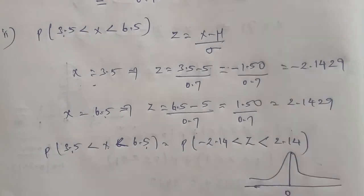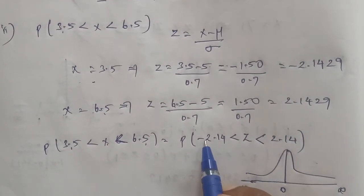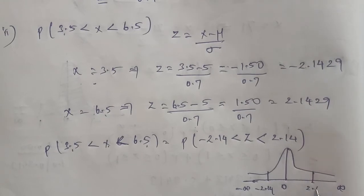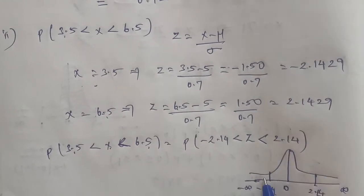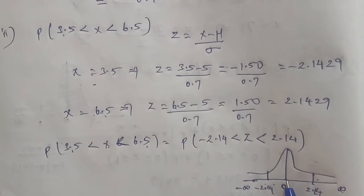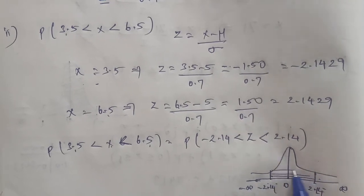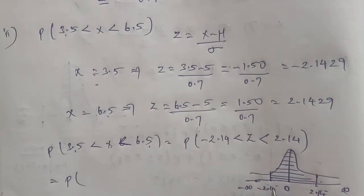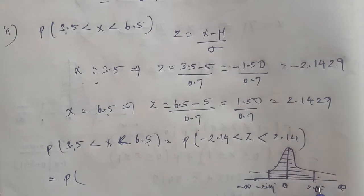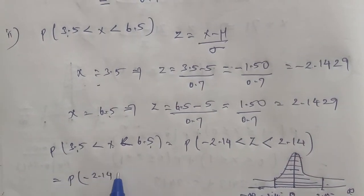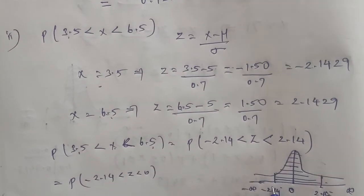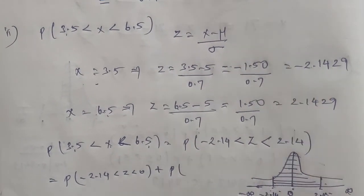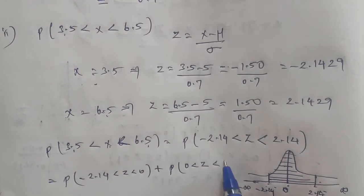The distribution ranges from 0 to minus infinity and plus infinity. Looking at minus 2.14 on the negative side and positive 2.14 on the positive side, the distribution goes from 0 to minus 2.14 and 0 to 2.14. Therefore, the distribution equals P(-2.14 < Z < 0) plus P(0 < Z < 2.14).